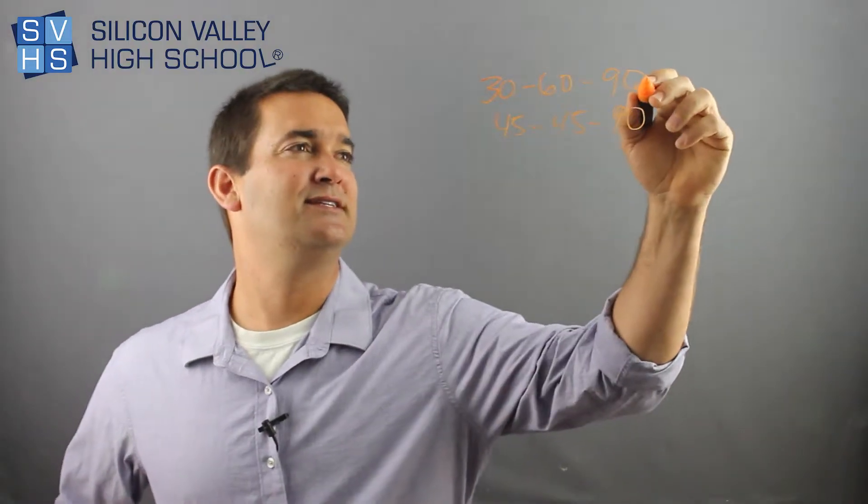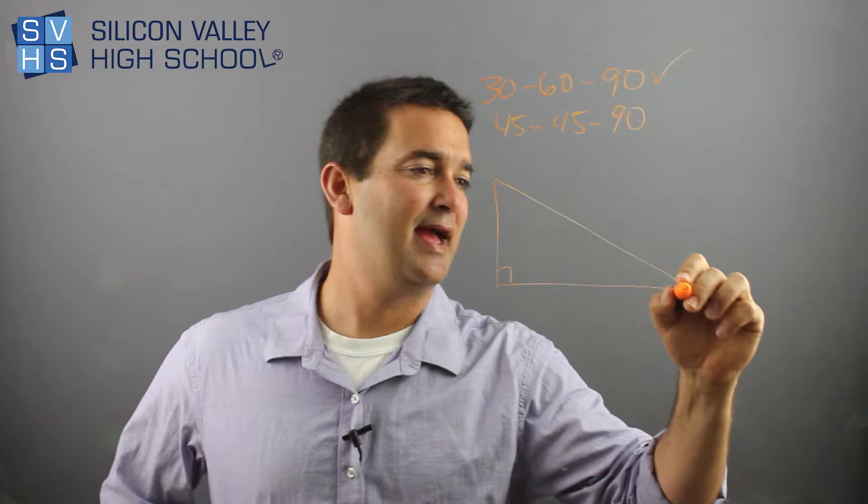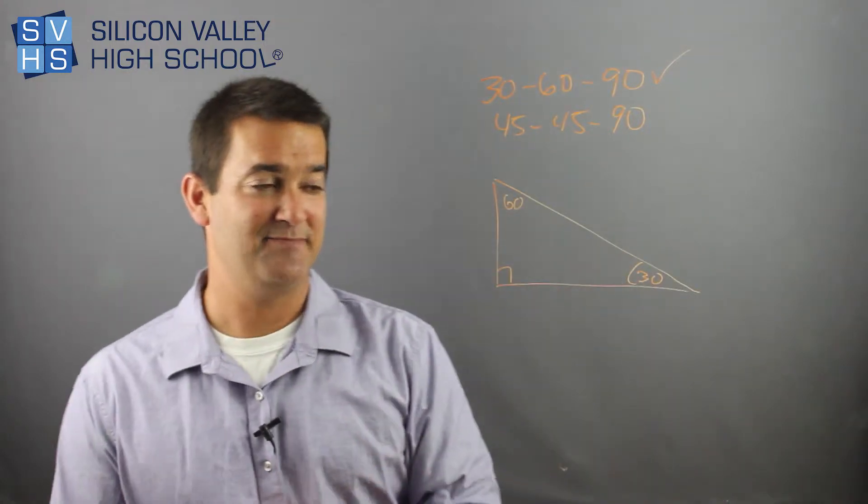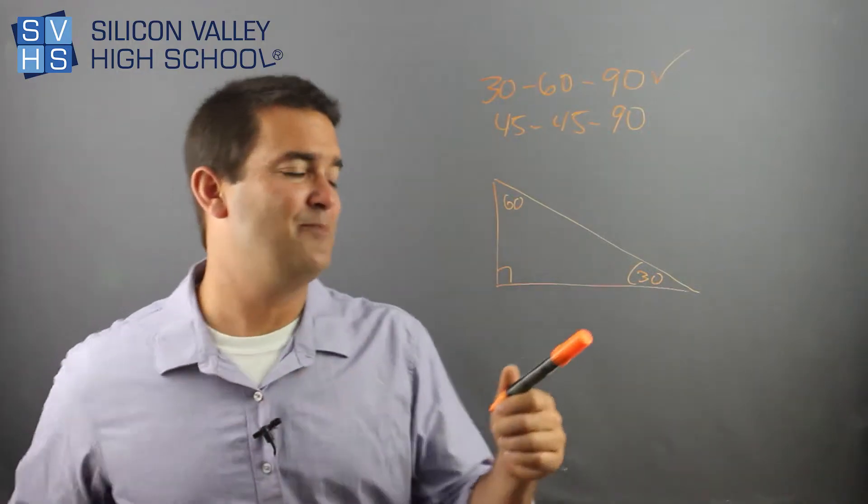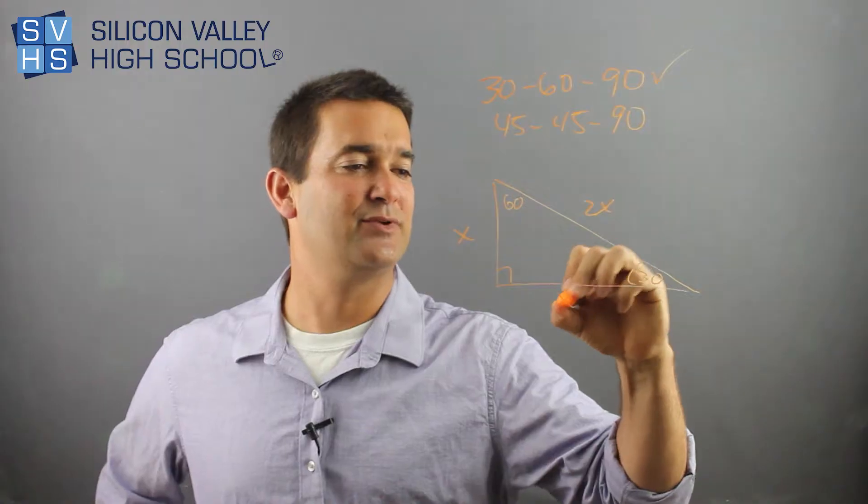All right, so let's start with the 30-60-90. Basically, here's your 90 degrees, and it will look something like this. Notice this is smaller, 30 degrees, and this is 60. Obviously that's not perfect, but who cares? So the rule is you have x, 2x, and x root 3.